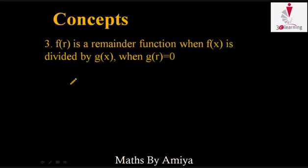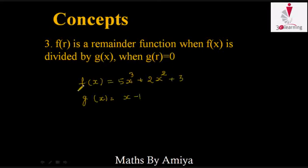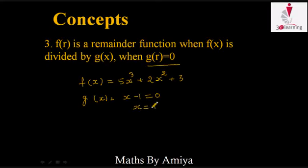Concept number 3 is the basic concept of finding remainders for a function. The remainder function f(r) is the remainder when f(x) is divided by g(x), when g(r) = 0. For example, if f(x) = 5x^3 + 2x^2 + 3 and g(x) = x - 1, to find the remainder of f(x) divided by g(x), we set g(x) = 0, which gives x = 1, and put x = 1 into f(x) to get the remainder.